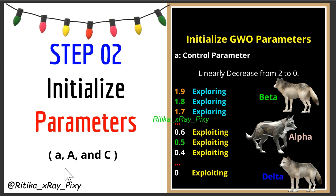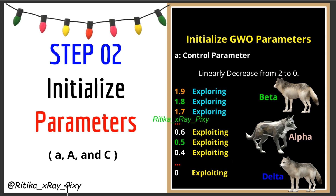Step 2: Initialize parameters. This algorithm uses several parameters to balance exploration and exploitation phases. The first parameter is the control parameter — it controls the magnitude of factor A, which influences whether the algorithm focuses on exploration or exploitation. As iterations increase, this parameter value linearly decreases from 2 to 0. When alpha is high (near 2), search agents explore; as alpha decreases toward 0, search agents perform exploitation and update positions around alpha, beta, and delta.